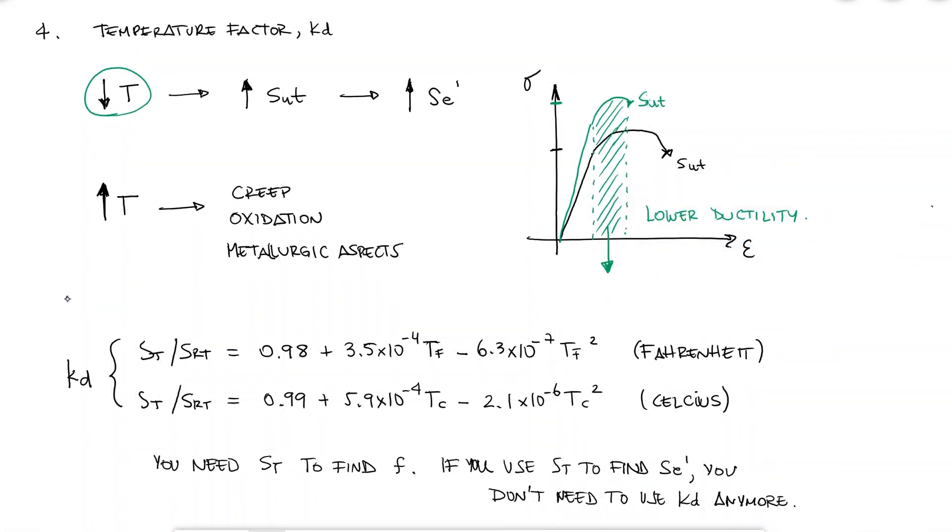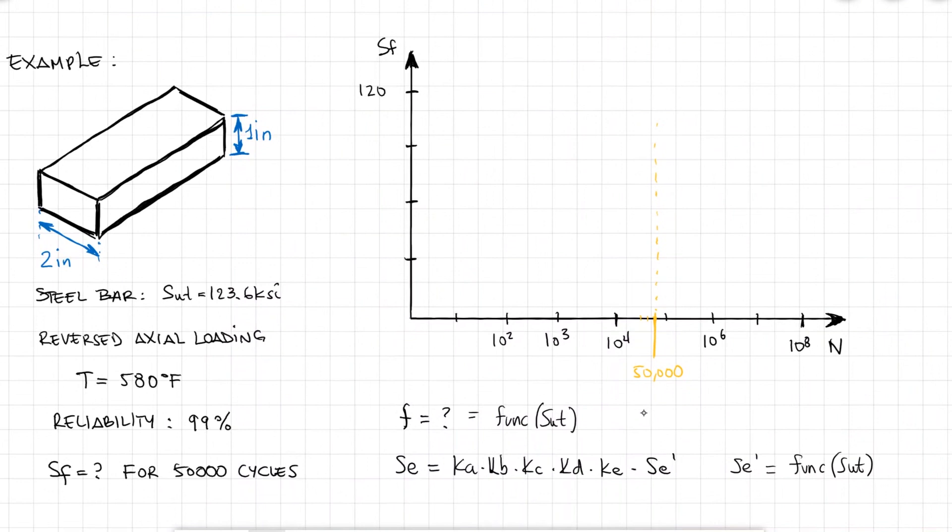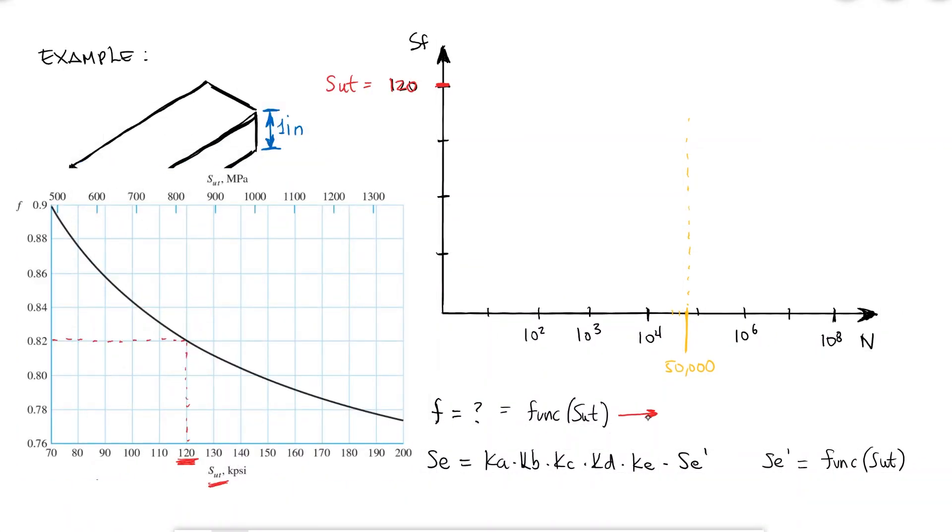By using a temperature of 580 Fahrenheit and using the first equation, which applies to Fahrenheit, I find that my KD factor is equal to 0.971. So if I know that the ultimate strength at room temperature is 123.6, the ultimate strength at the operating temperature would be equal to 120 KSI. With this information I can do three things. I can label the ultimate strength on my S-N diagram, I can find the F coefficient that I need for the low cycle region, and I can calculate the initial value for the endurance limit, following what we learned during the last video.